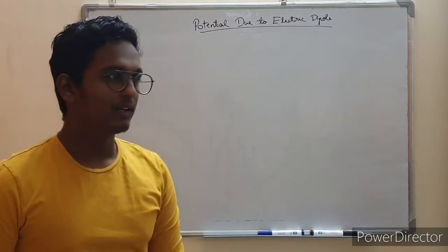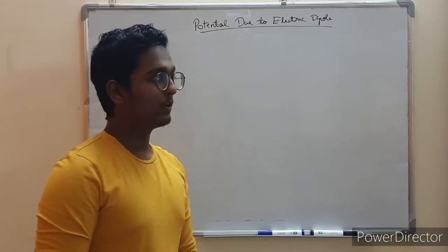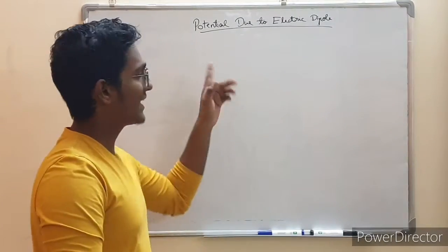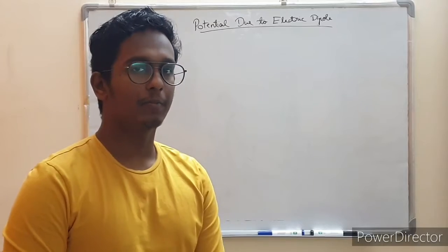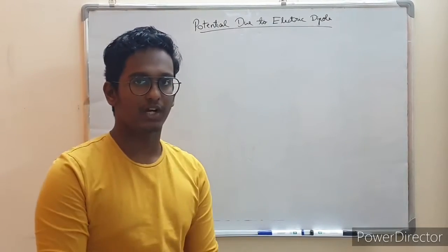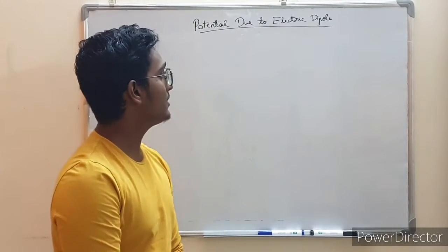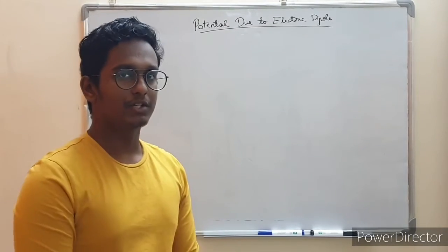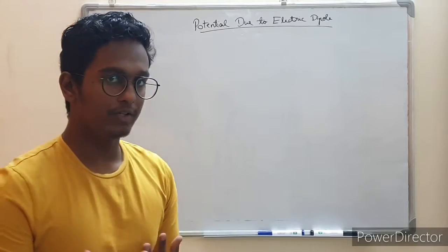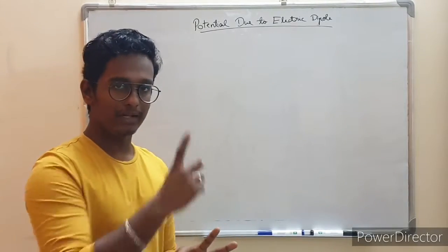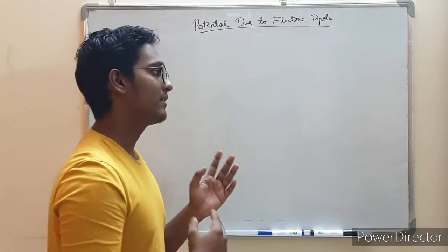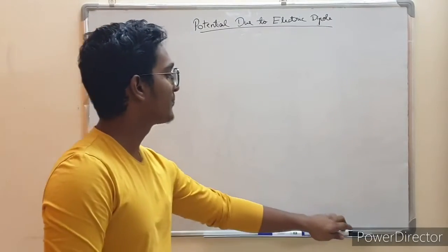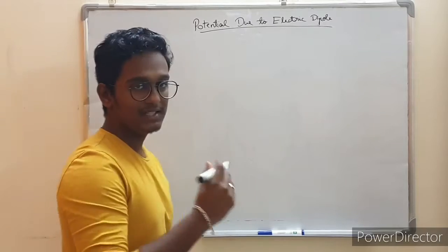Hey guys, welcome back. In this video we look at two topics: the derivation for potential due to an electric dipole, and the second one is a very short topic, that is potential due to a system of charges. This derivation is mostly mathematics — it's just algebraic simplification. The only thing we need to know is to correctly draw the diagram, label the distances, and find the sum of the potentials.